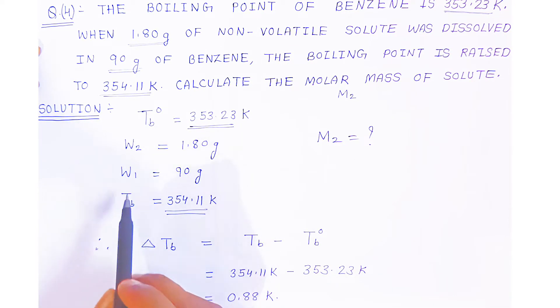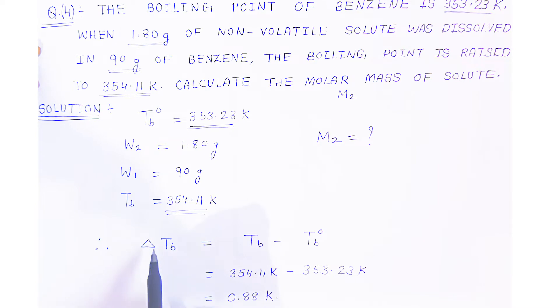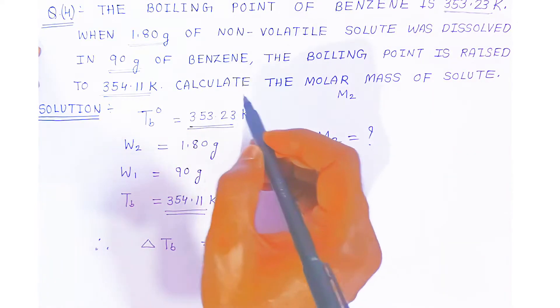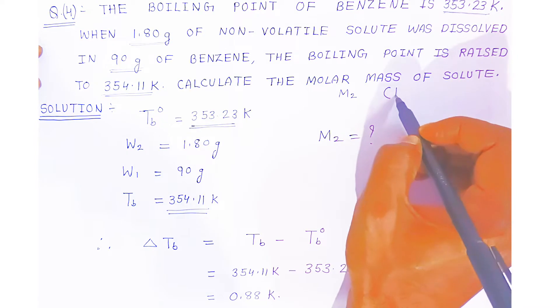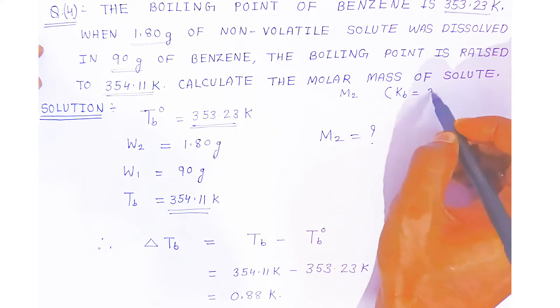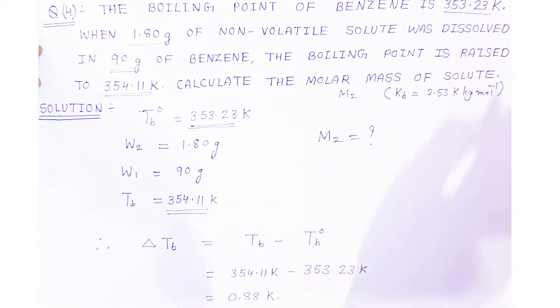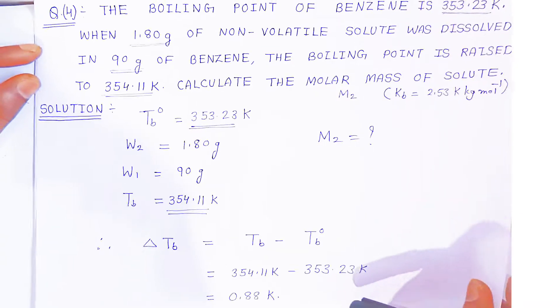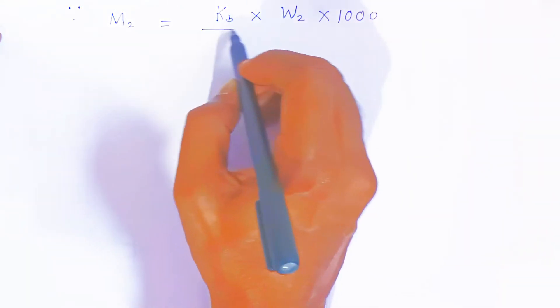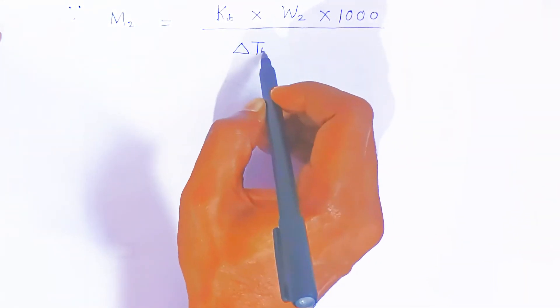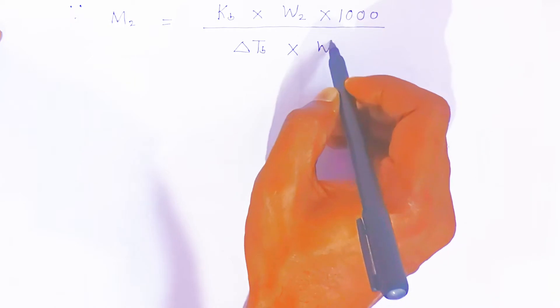Now students, you know the data — weight of solute, weight of solvent, and the elevation in boiling point. One more thing given in the question is Kb, the boiling point constant for benzene, which is 2.53 Kelvin·kg/mol. In the examination it will be given to you. Now, the formula for molar mass M2 equals: Kb × weight of solute × 1000, divided by elevation in boiling point × weight of solvent.